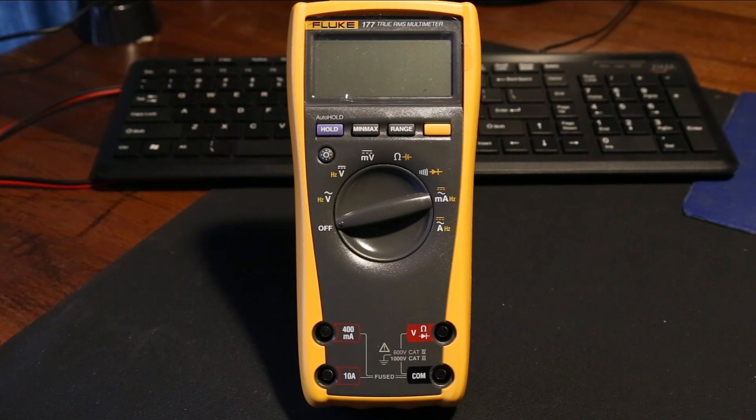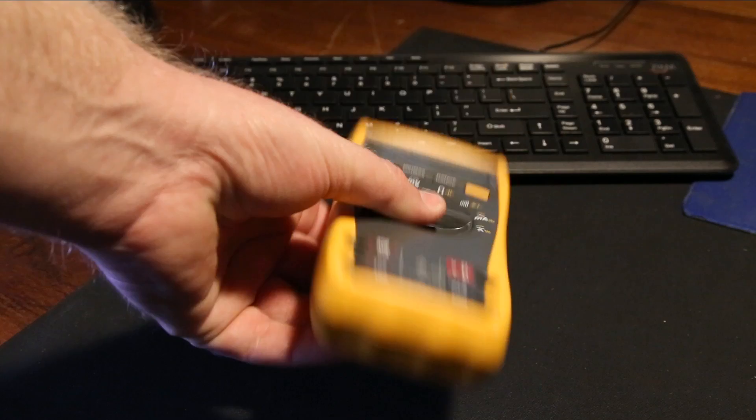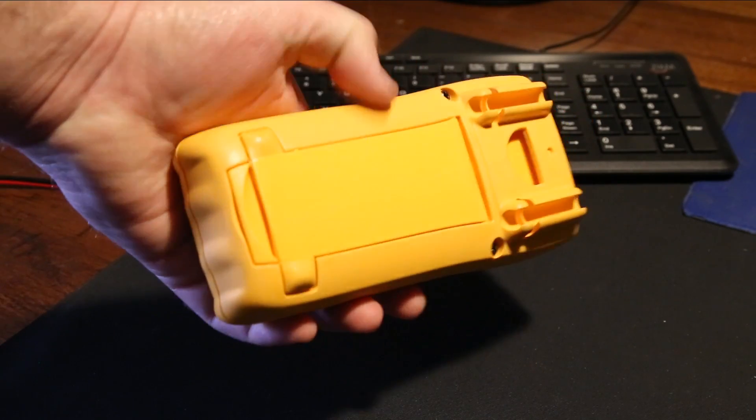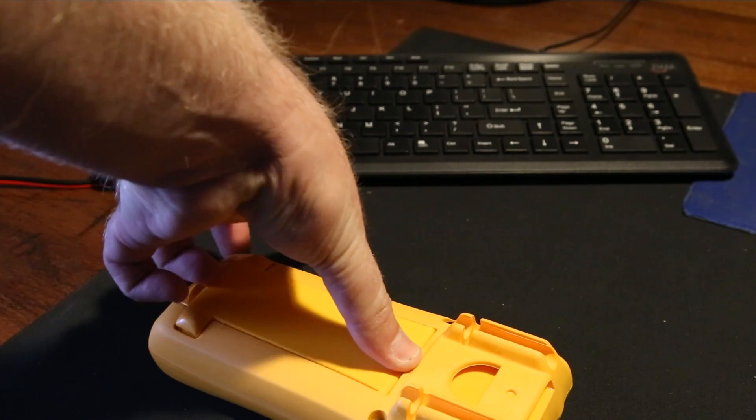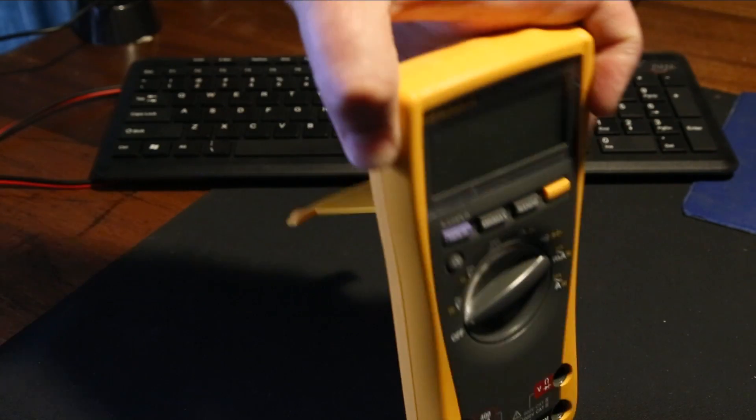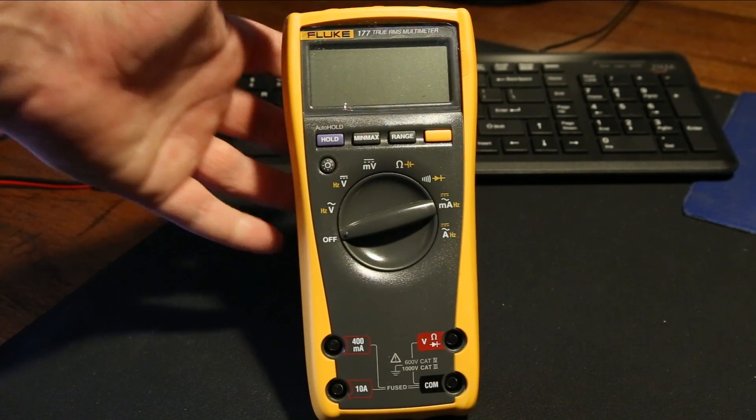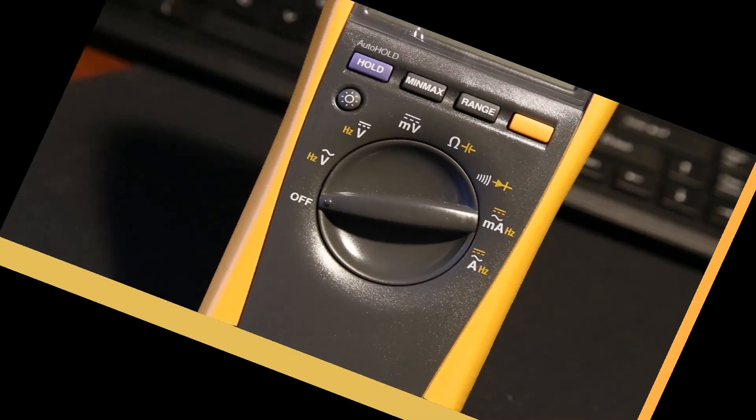If we have a look at the form factor of this meter, it's the standard sort of Fluke meter, yellow build. Quite well made overall. Nice bail, tilting bail, meter probe holders, etc. The meter is very well designed, very well made, practical. It'll get the job done. Let's get in a little bit closer now and have a look at the meter's features.